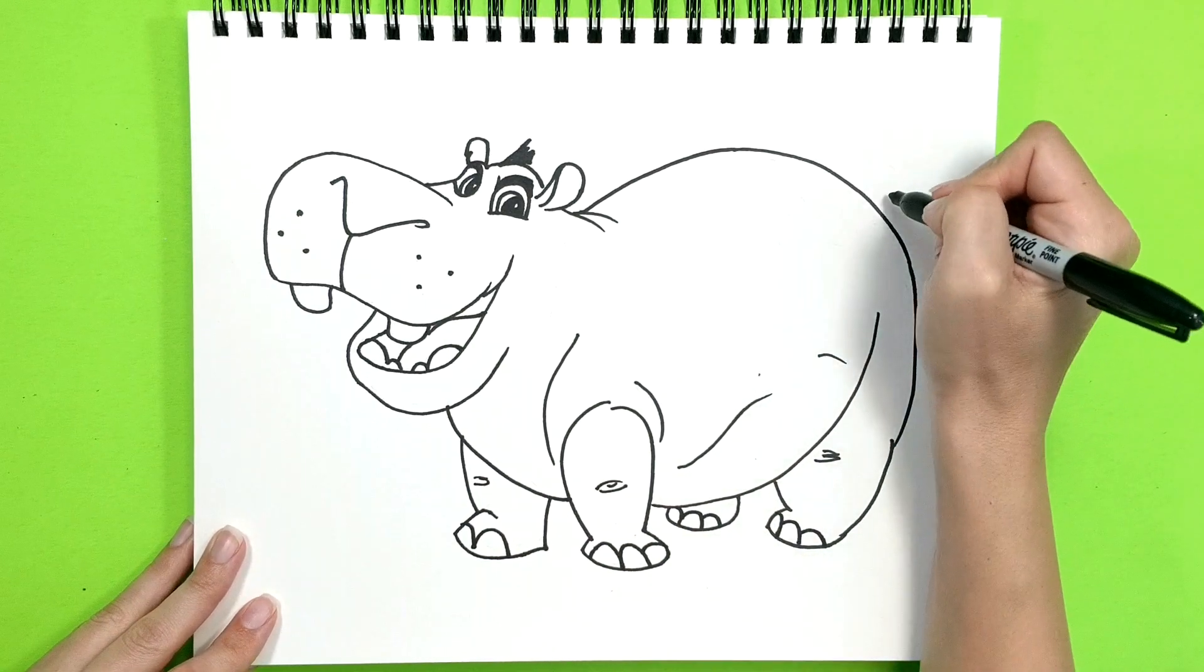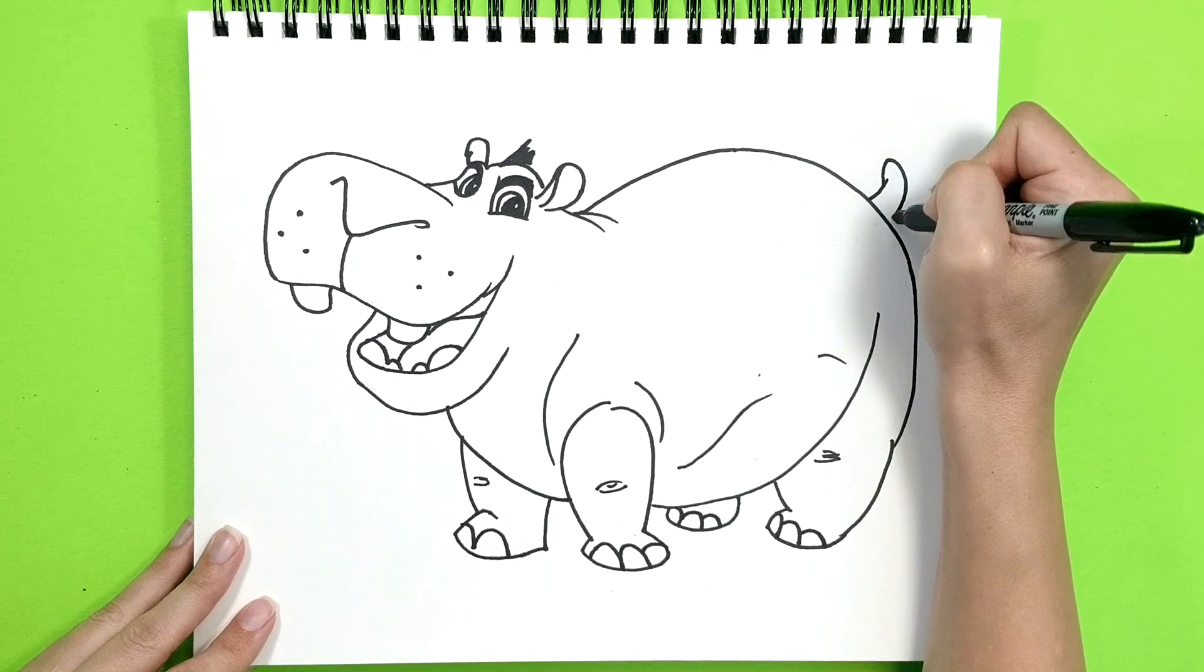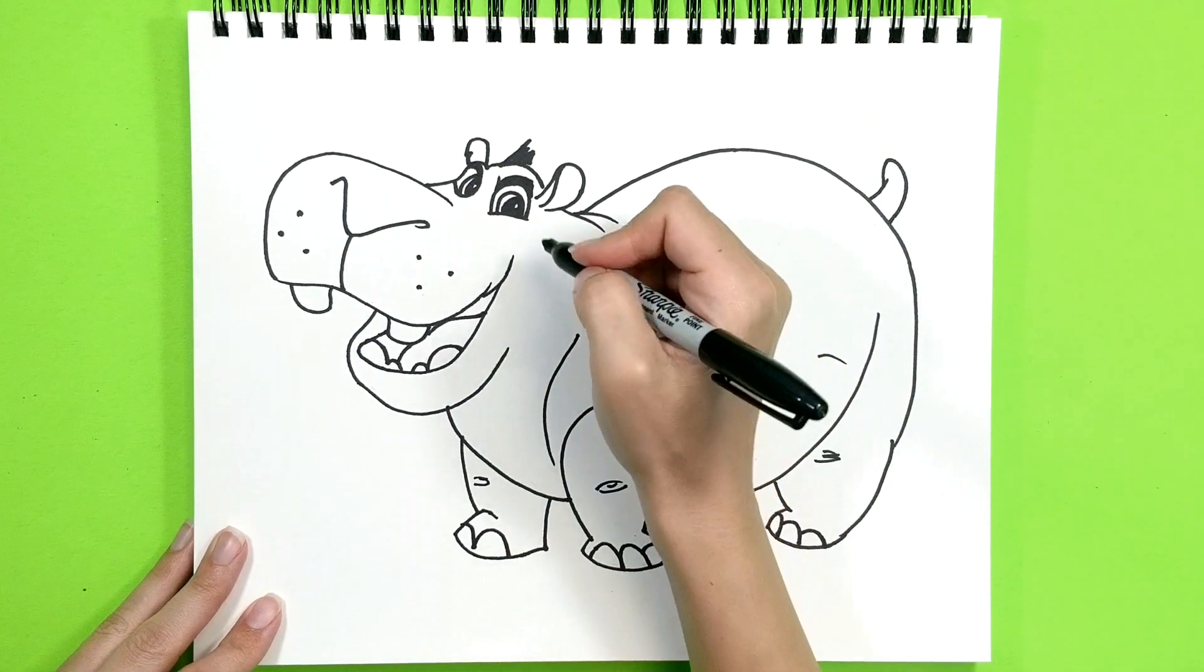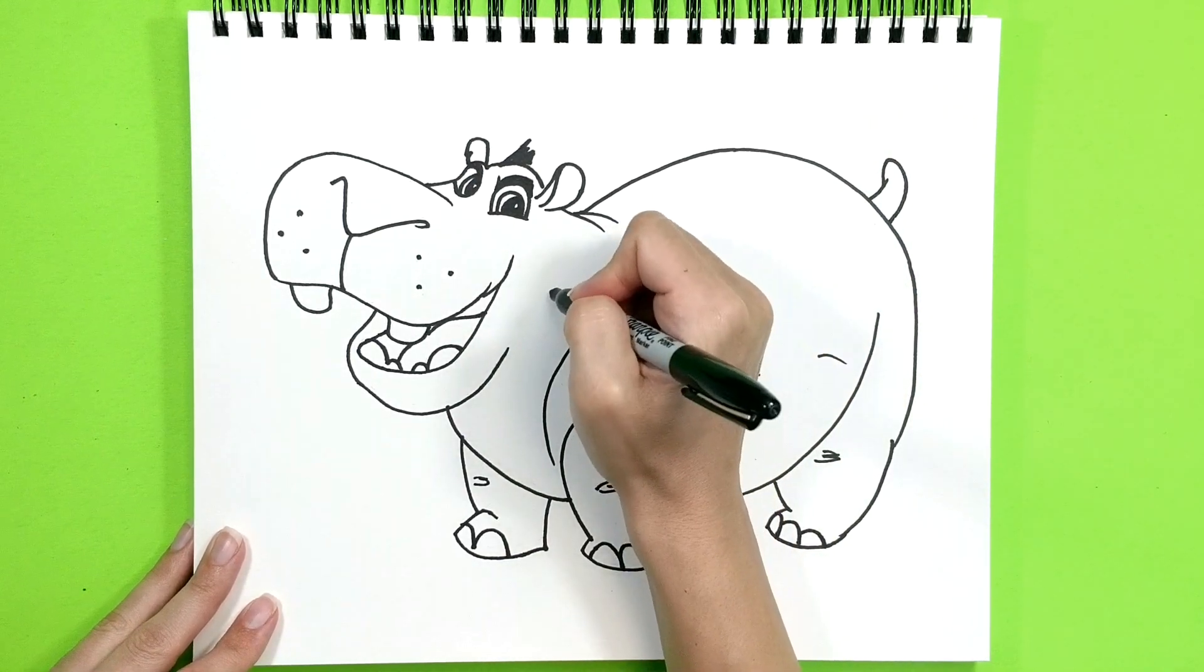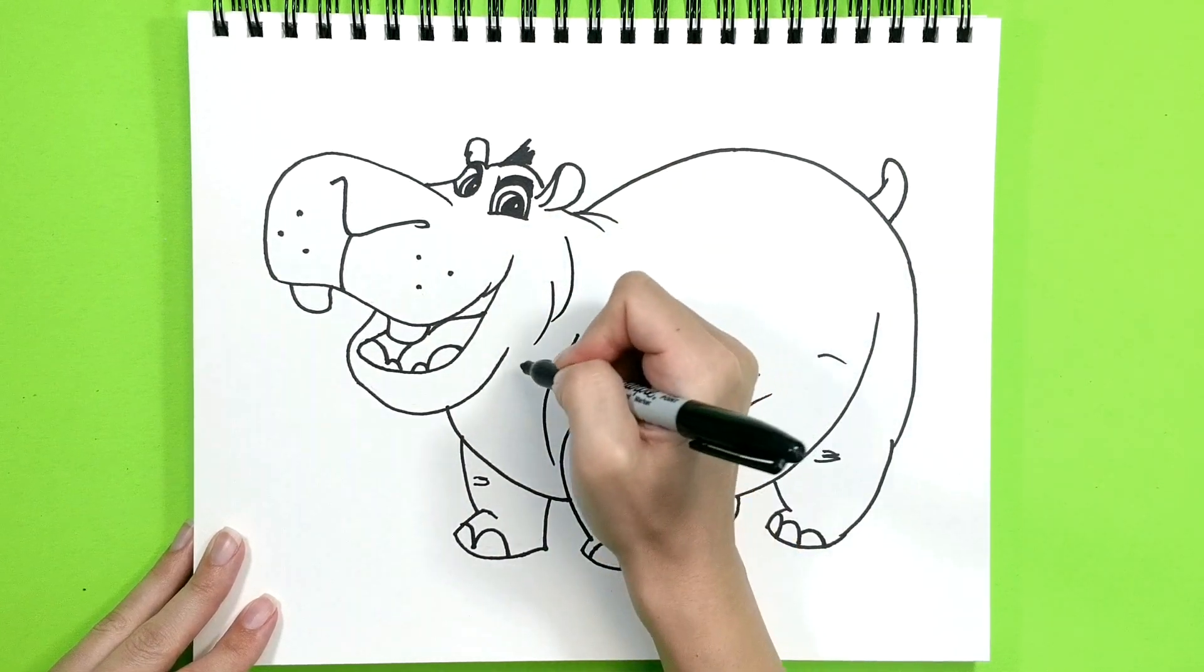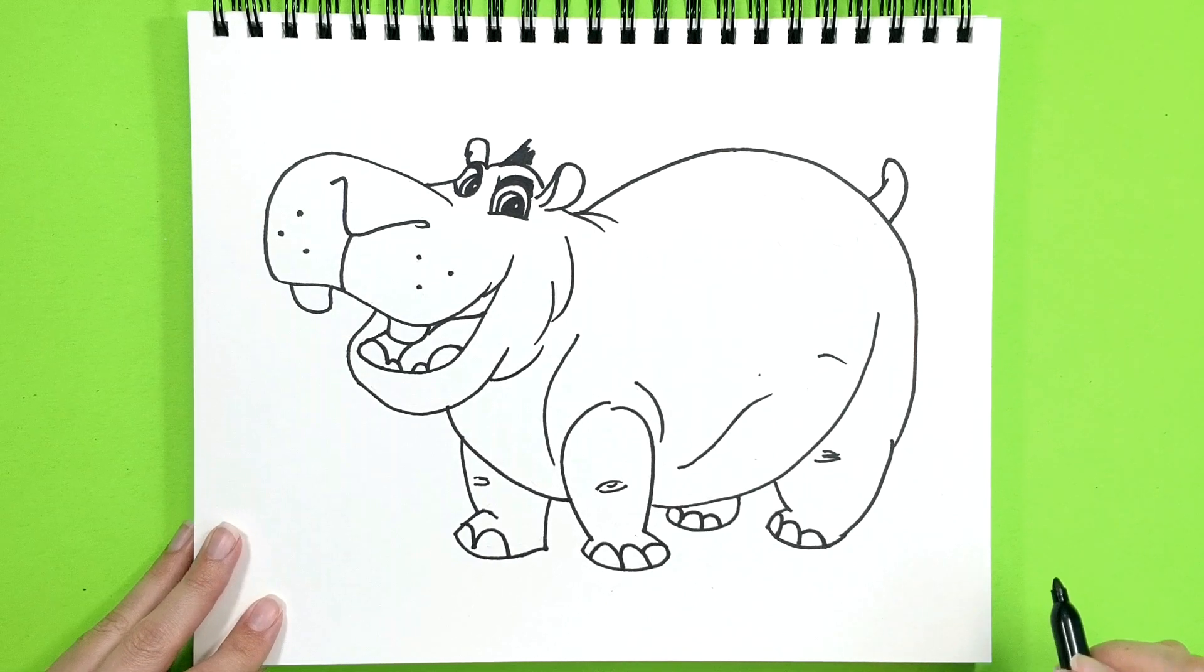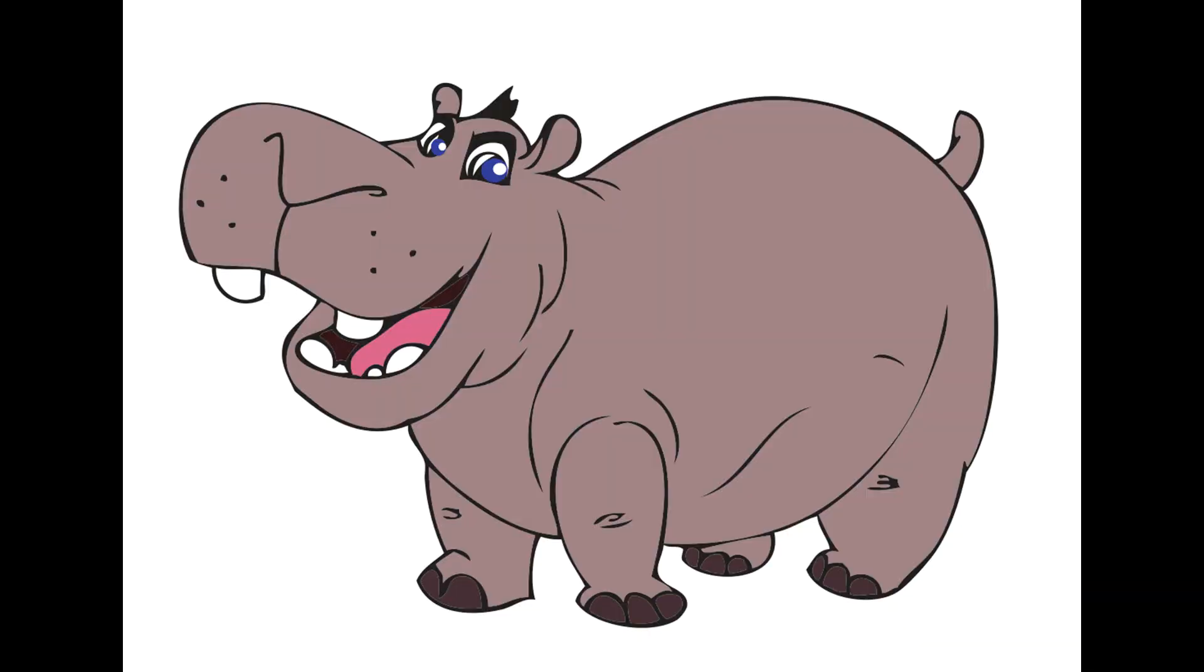Cute little tail. It's a small tail for such a big hippo. And some more wrinkles around his face and his neck. Okay, I think we're all done. Bye kids, we'll see you next time!